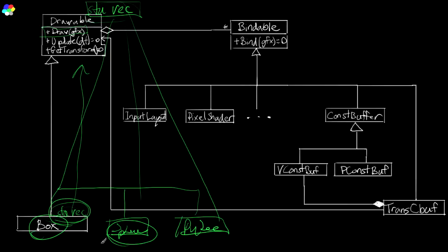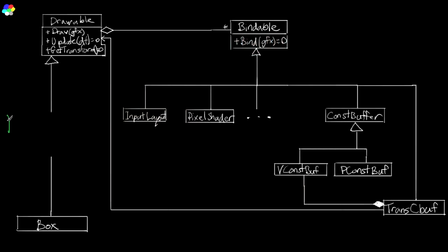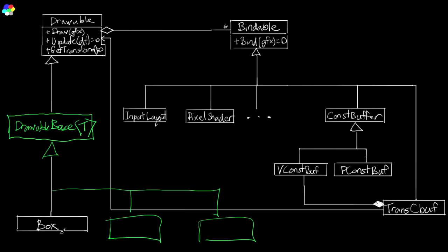So we've got a problem — we basically have to copy and paste if we want separate static bindables for each derived class. Now let me show you one weird trick C++ programmers hate. What we're going to do is create a class in this inheritance hierarchy between Drawable and the actual concrete classes, and we're going to call it DrawableBase. It will be a template class T, and every different type that inherits from Drawable will instead inherit from DrawableBase with a different T.